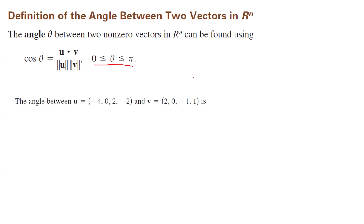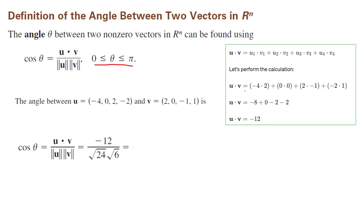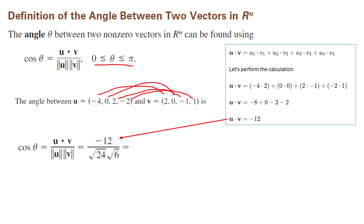For example, to find the angle between two vectors, follow the formula: cosine theta equals u dot v divided by the magnitude of u times the magnitude of v. To find u dot v, multiply the corresponding components together and add them, which gives negative 12. On the denominator, the magnitude of vector u is the square root of 24, which is 16 plus 0 plus 4 plus 4, and the magnitude of the second vector is the square root of 4 plus 0 plus 1 plus 1, which is the square root of 6.